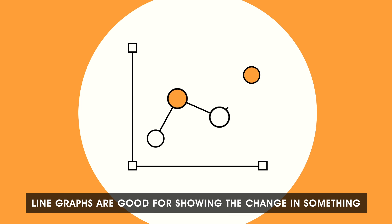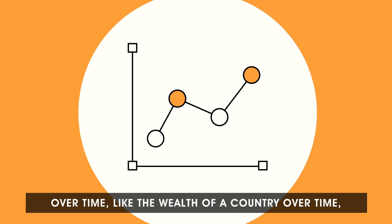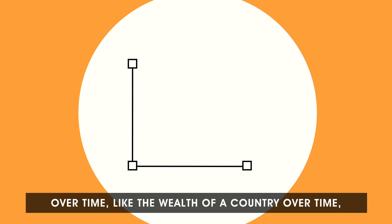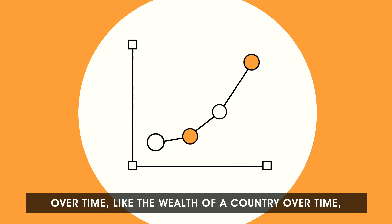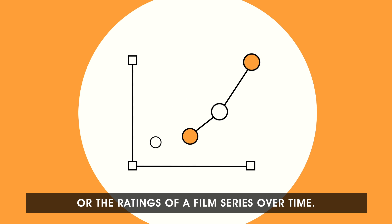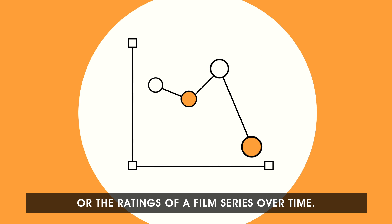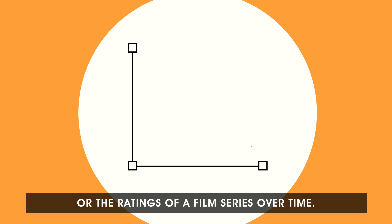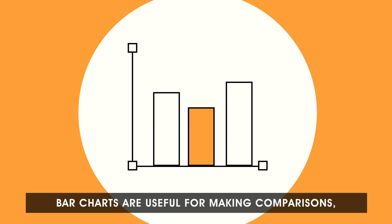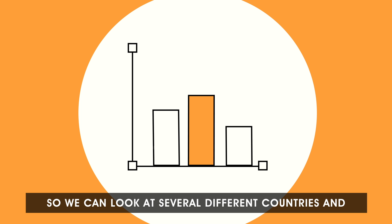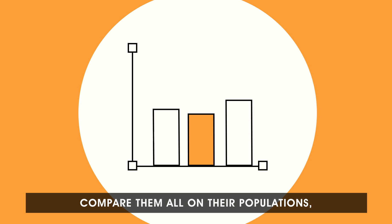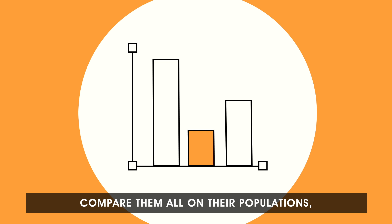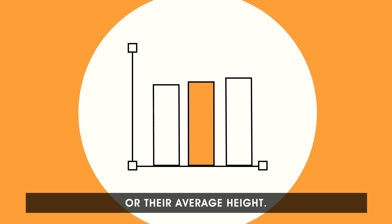Line graphs are good for showing the change in something over time, like the wealth of a country over time, or the ratings of a film series over time. Bar charts are useful for making comparisons, so we can look at several different countries and compare them all on their populations or their average height.